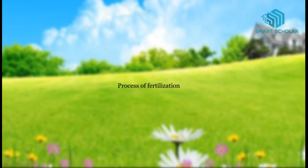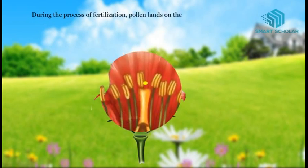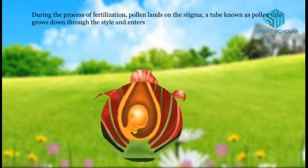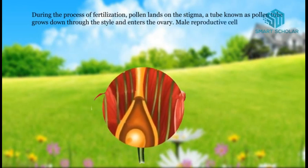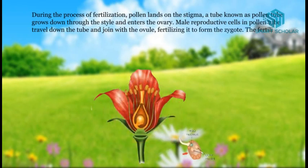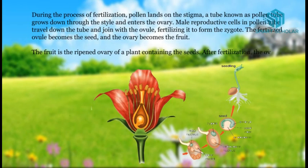During the process of fertilization, pollen lands on the stigma. A tube known as the pollen tube grows down through the style and enters the ovary. Male reproductive cells in the pollen tube travel down through the tube and join with the ovule, fertilizing it to form the zygote. The fertilized ovule becomes the seed and the ovary becomes the fruit. The fruit is the ripened ovary of a plant containing the seeds. After fertilization, the ovary swells and becomes either fleshy or hard and dry to protect the developing seeds.